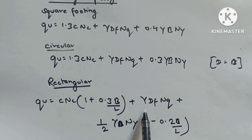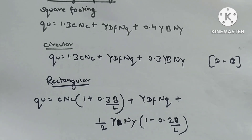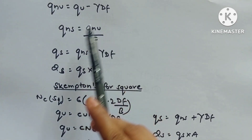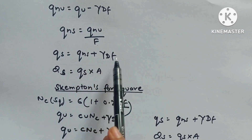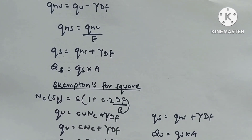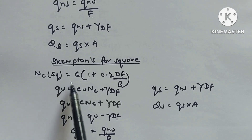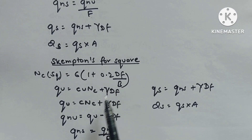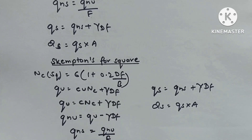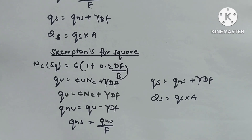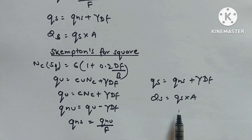Rectangular footing includes correction factors (1 − 0.2B/L). Net ultimate bearing capacity qnu = qu − γDf. Safe bearing capacity qns = qnu/F. Net safe bearing capacity qns = qns + γDf. Load capacity Qs = qns × A.